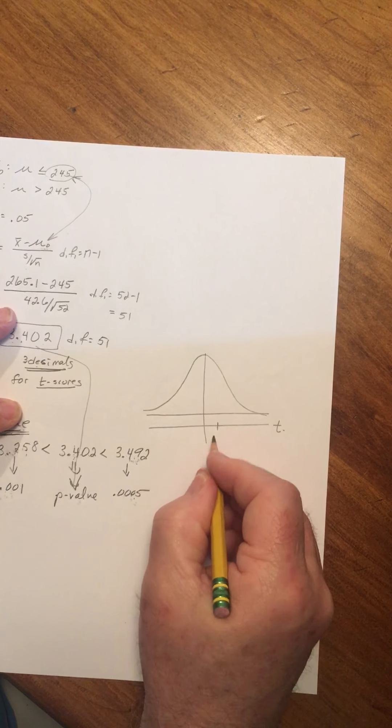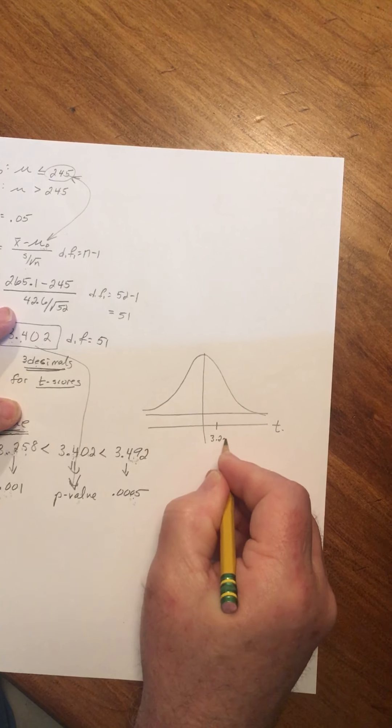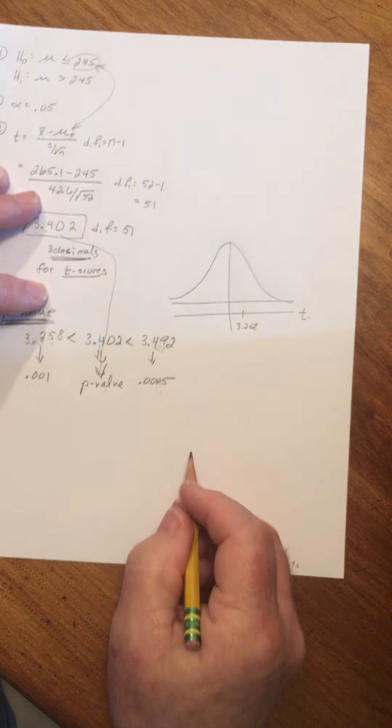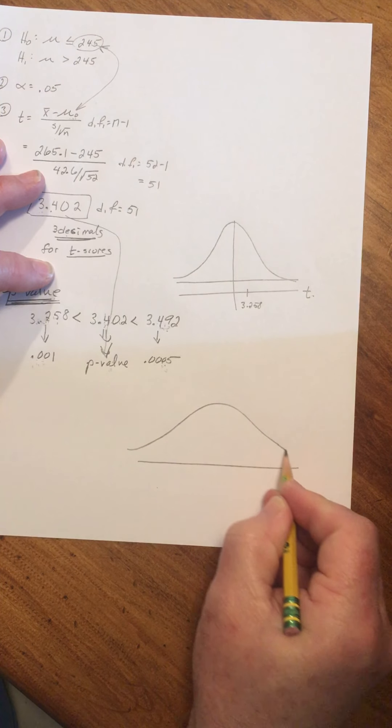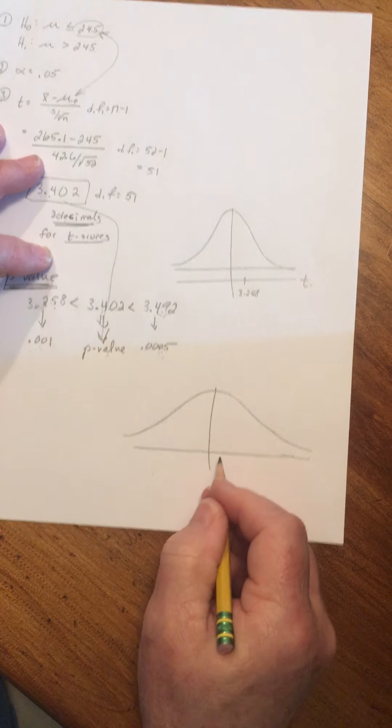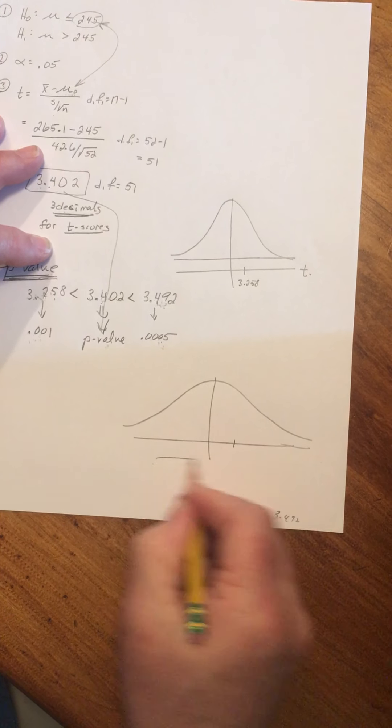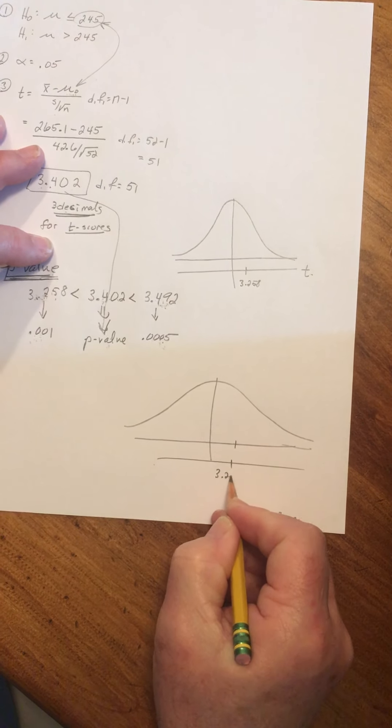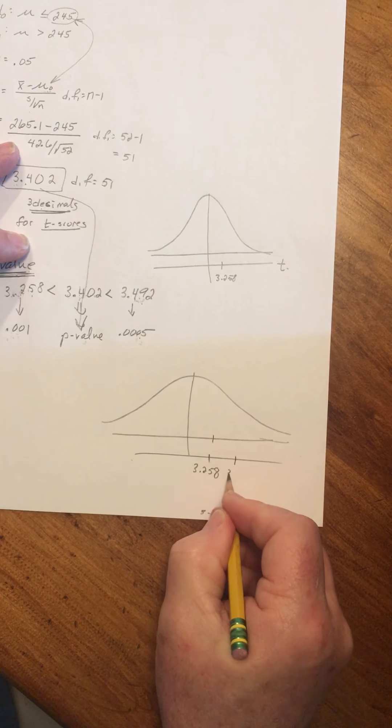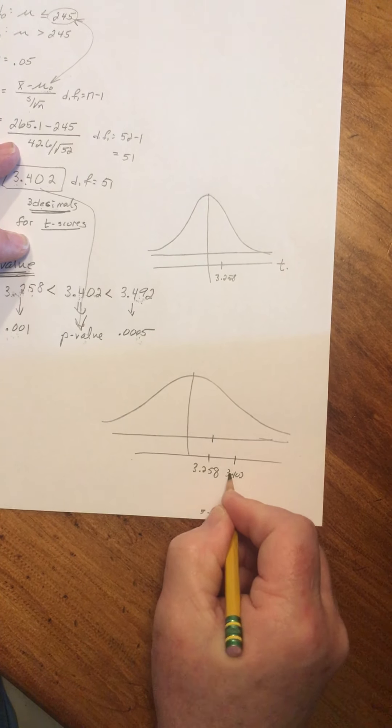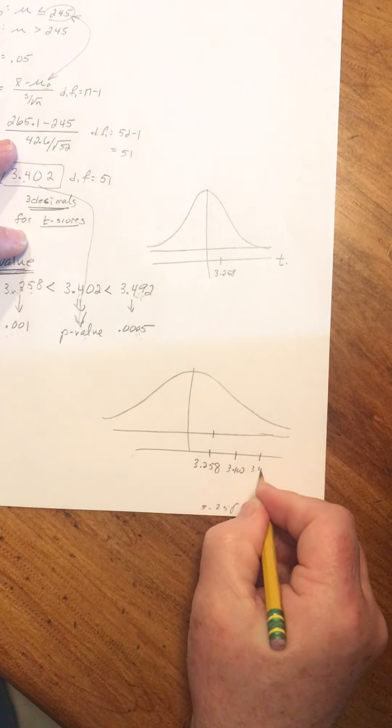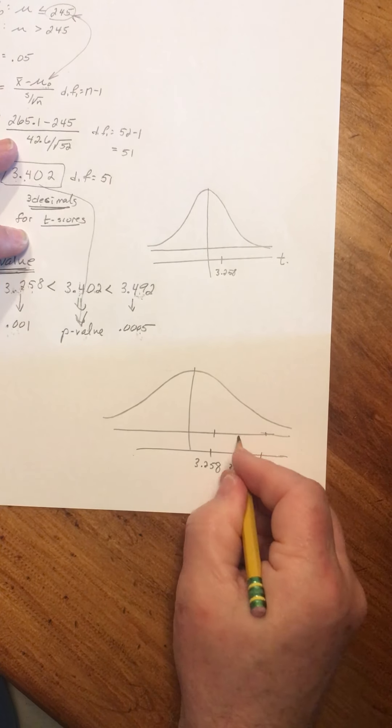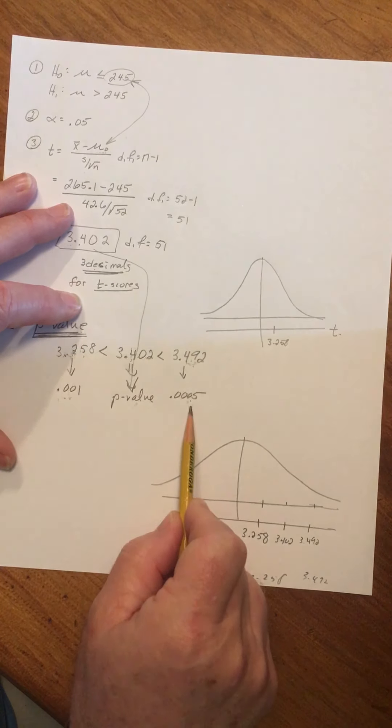This is now the t-scale, not z. And we have our three numbers: 3.258, we have 3.402 (this is the number we want), and we also have 3.492. Let me show you what these small numbers represent. These are probabilities.